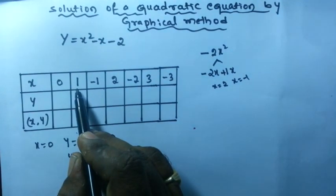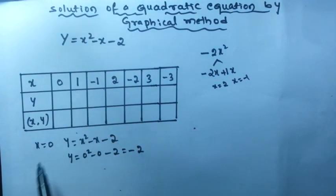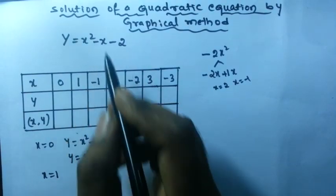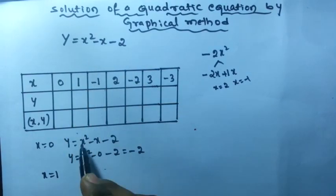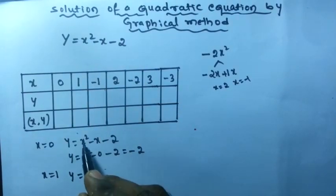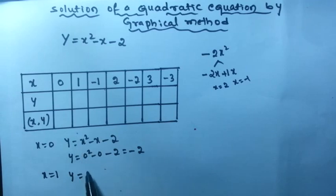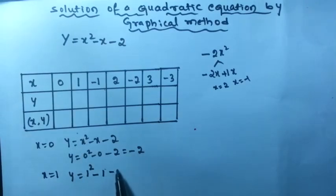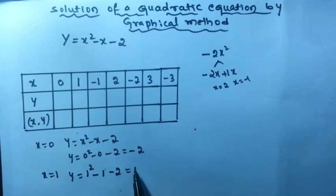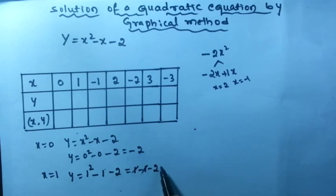Similarly, give x = 1. Substitute into the equation: y = 1² - 1 - 2 = 1 - 1 - 2. Minus 1 and plus 1 cancel, so you get minus 2.